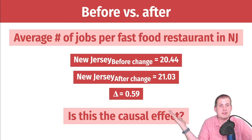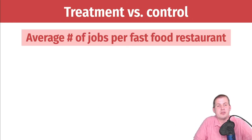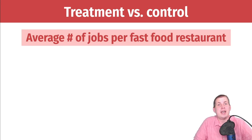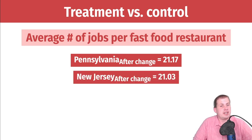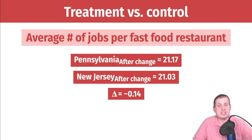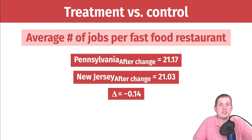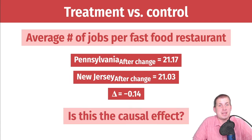So just doing before-and-after comparisons within a group is not enough to talk about causal effects. What if instead you only look at treatment versus control — the average fast food restaurant employees after the policy change in both Pennsylvania and New Jersey? Pennsylvania had an average of 21.1 workers and New Jersey had 21.03, so it actually looks like there were fewer jobs in New Jersey restaurants — a negative effect of raising the minimum wage. But that's also wrong.